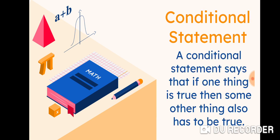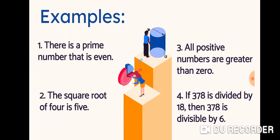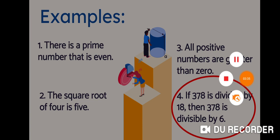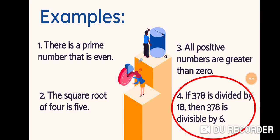Next is the conditional statement. A conditional statement says that if one thing is true, then some other thing also has to be true. It is also called an if-then statement. From our examples, number four — if 378 is divided by 18, then 378 is divisible by 6 — is an example of a conditional statement.